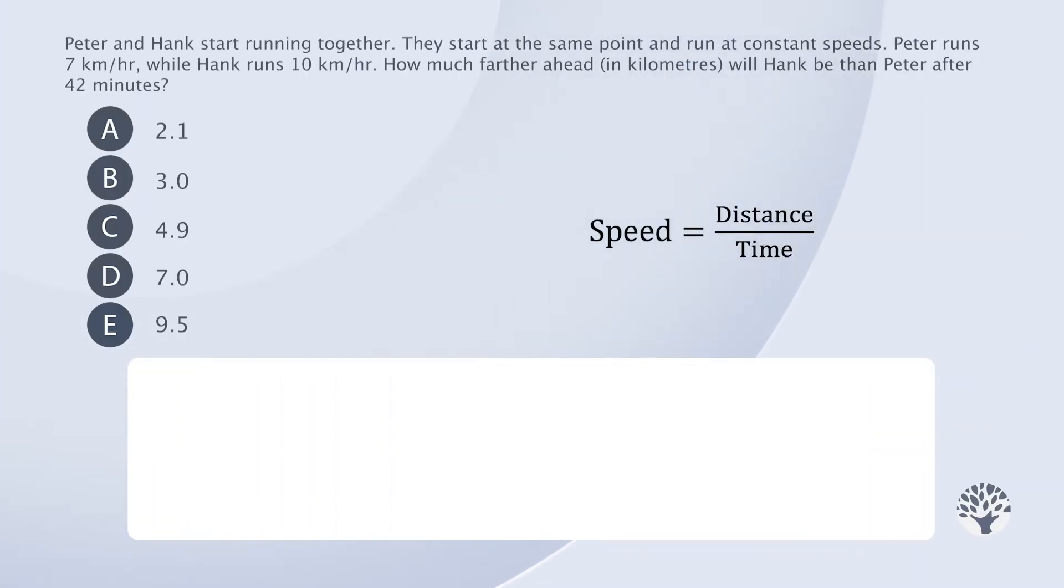We'll start by carefully analyzing the question. The question reveals two things: the concept we need to use and the data we need to look at. Peter and Hank start running together. They start at the same point and run at constant speeds. Peter runs 7 kilometers per hour while Hank runs 10 kilometers per hour. How much farther ahead in kilometers will Hank be than Peter after 42 minutes?